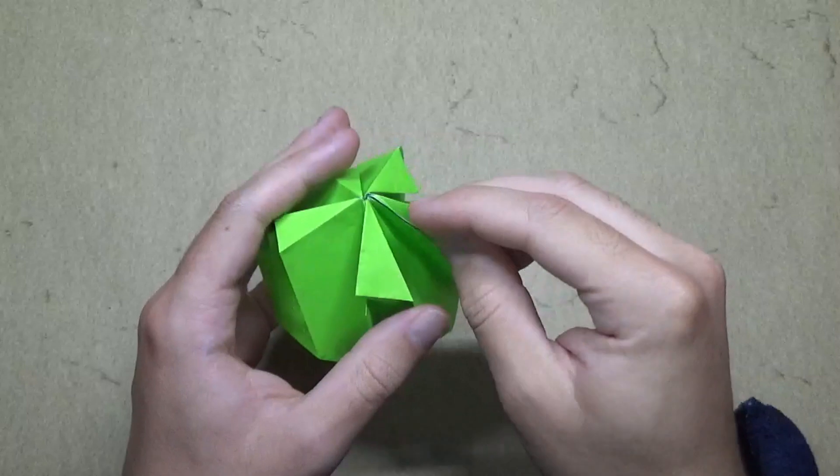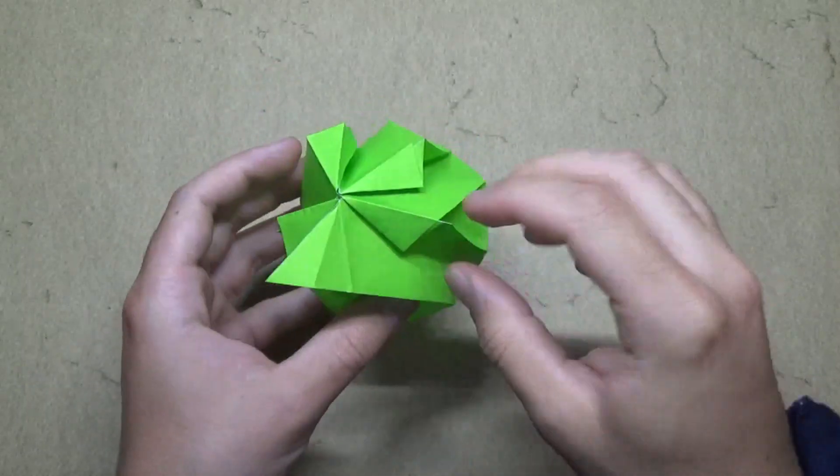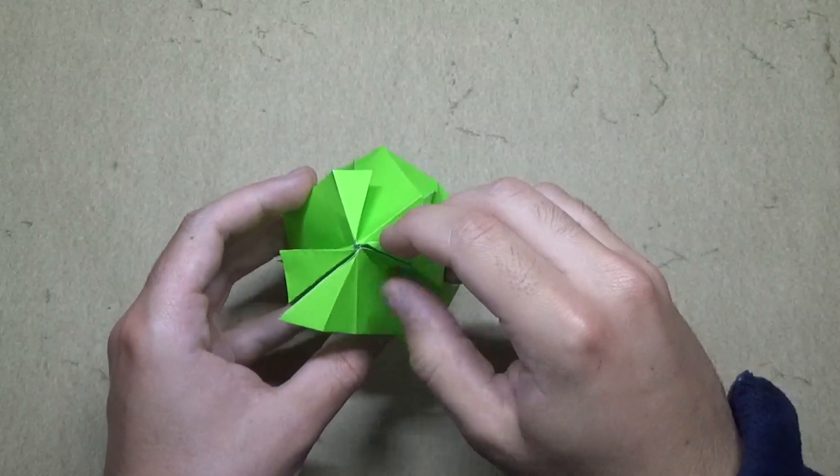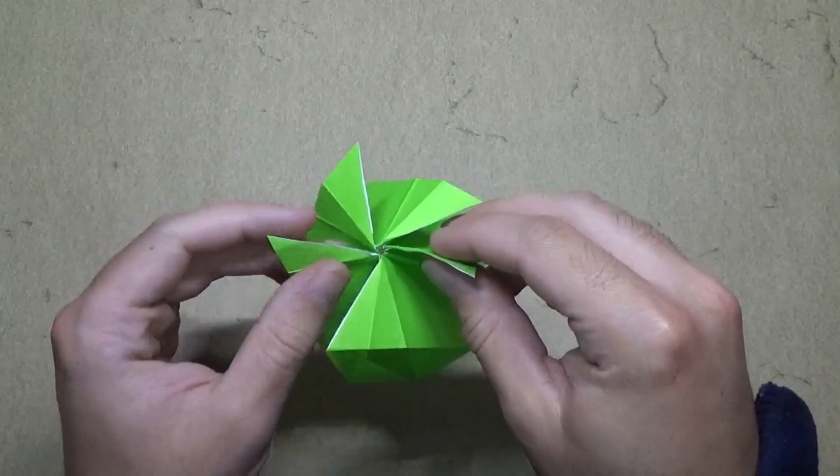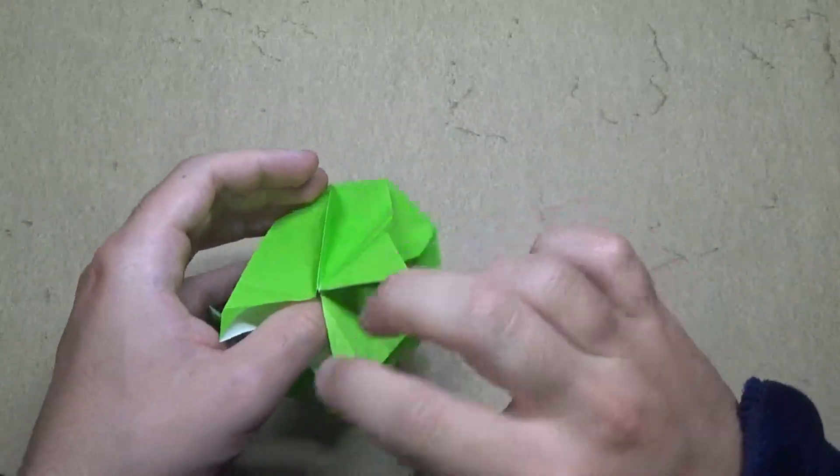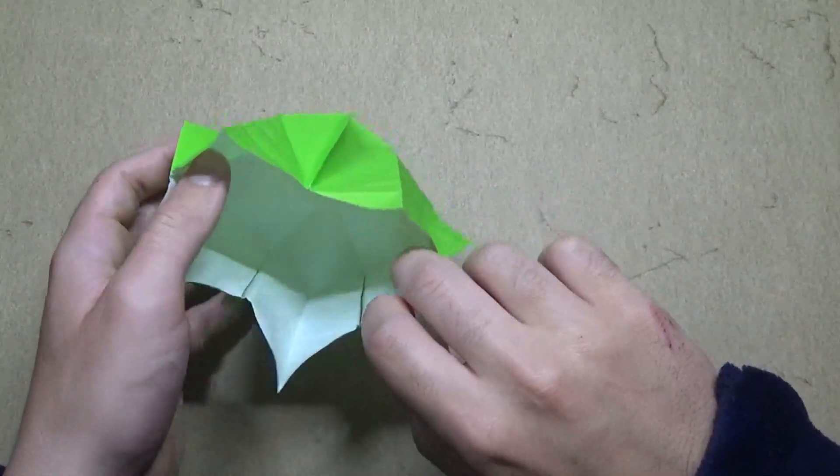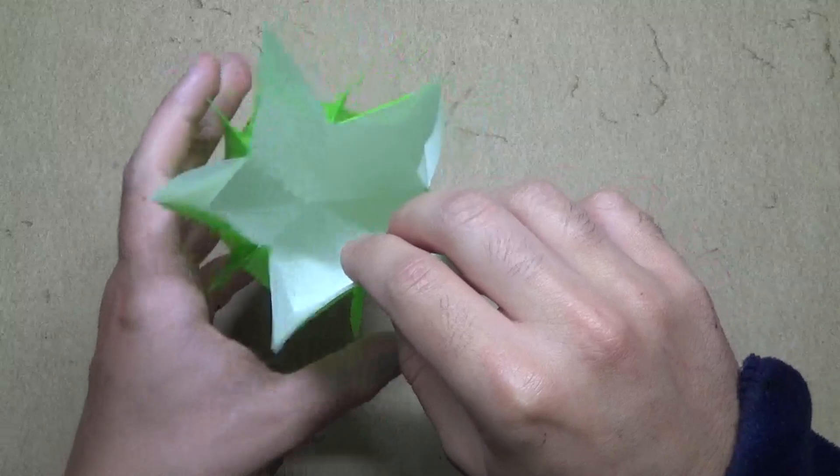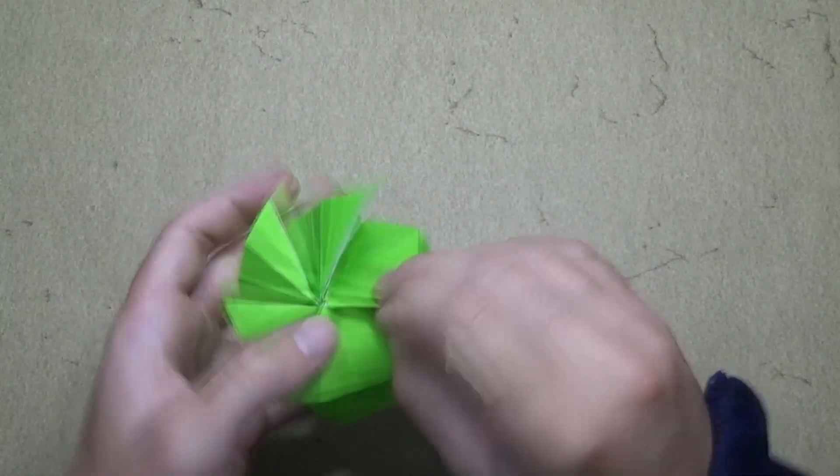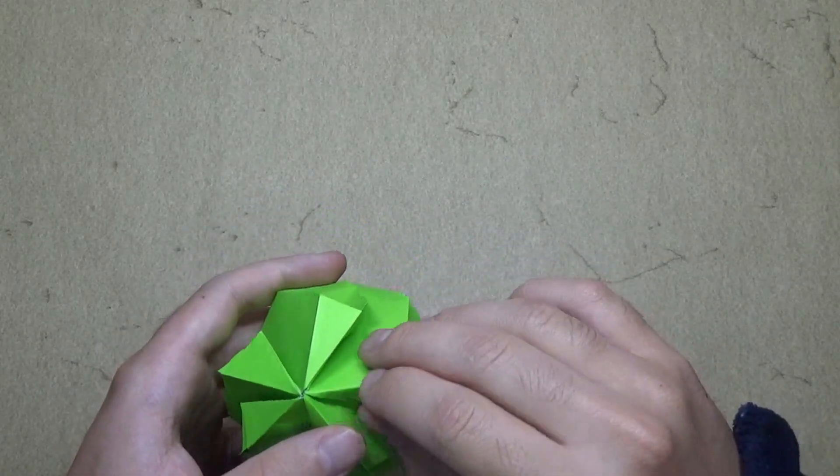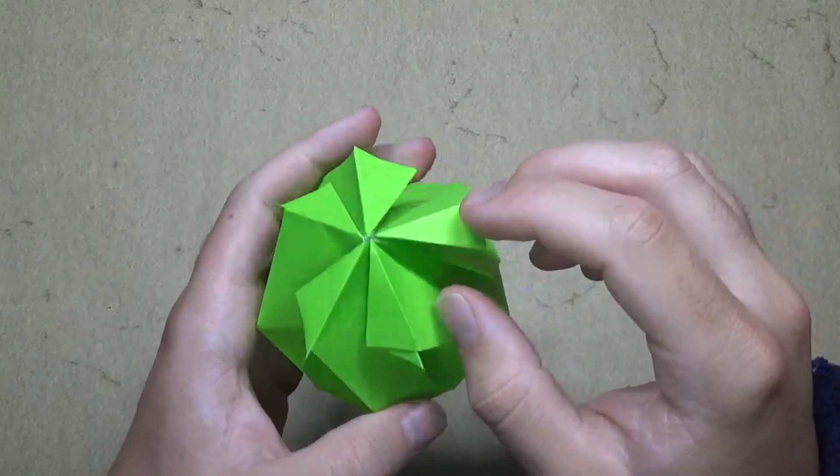This is how you open it. So you just release these five flaps and then you open it up just like this, and you can stick a gift in there and close it back up and it stays nice and locked.